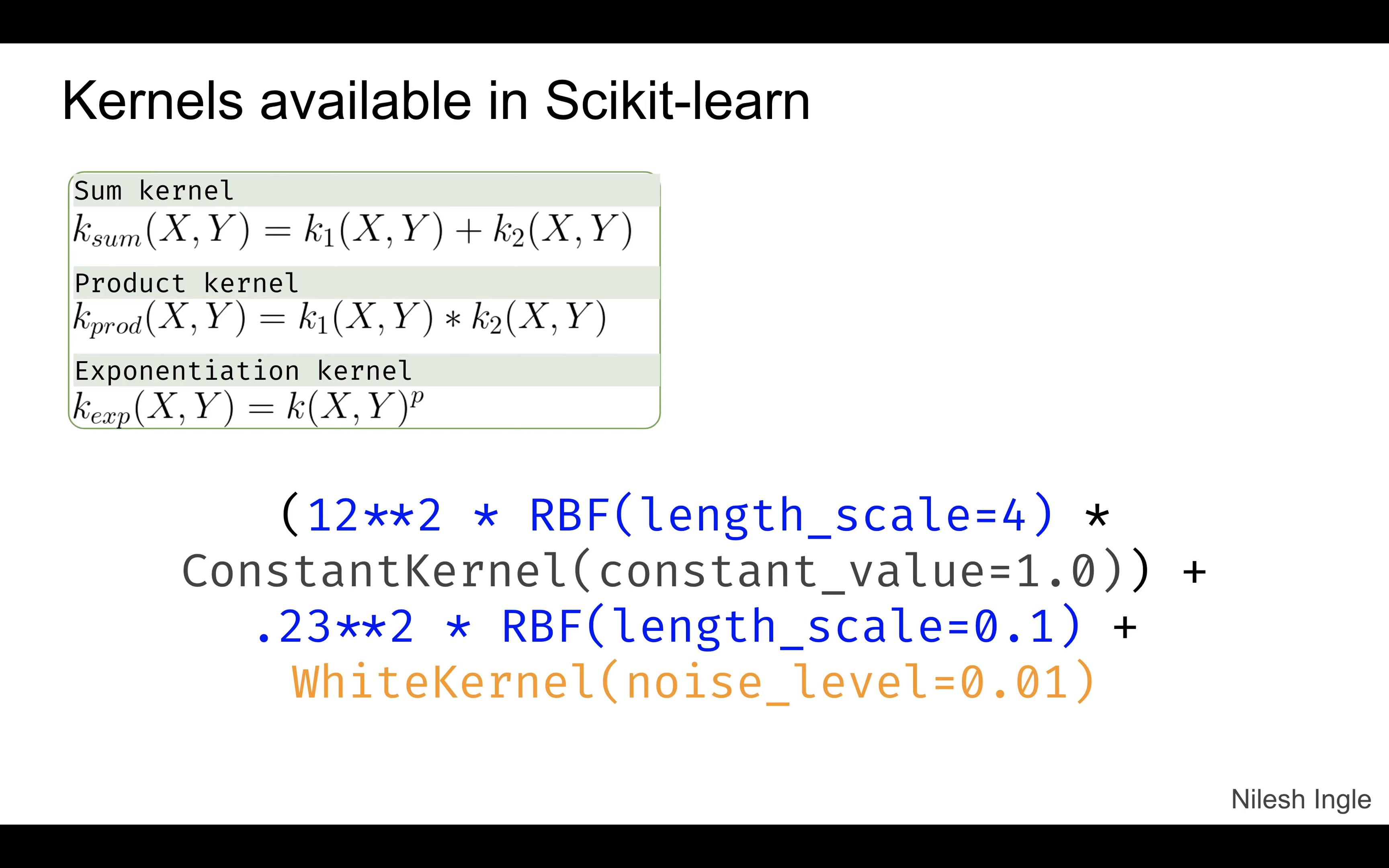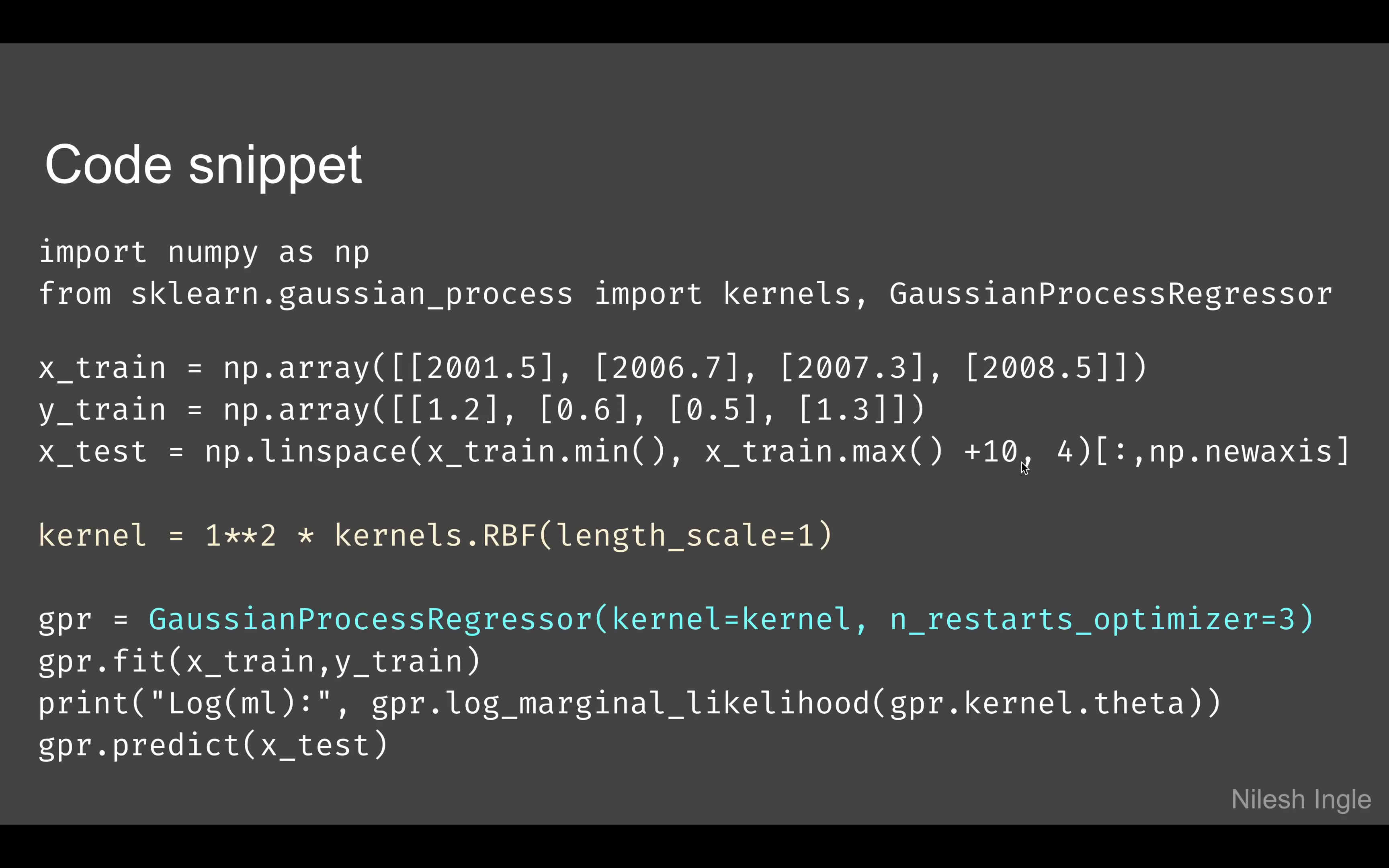In the code snippet, we have this new library gaussian_process and we can import kernels and GaussianProcessRegressor from that. Then we have this train and test dataset. Notice that the test dataset in this case is created using the train dataset.